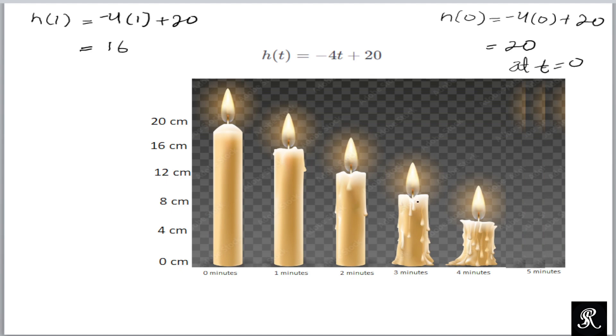And then at t = 3, the height of the candle will be 8 cm. At t = 4, when we substitute in this formula t = 4, we will get the height 4 cm. And then at t = 5, let us consider what would happen. h(5) = -4 × 5 + 20, the initial height of the candle, so that would be -20 + 20, that would give you 0. This means the whole candle will vanish or burn out after 5 minutes and we will get 0 height. And also we are asked about the domain and range of this function.